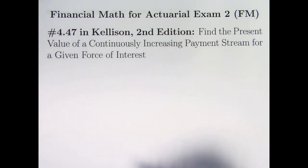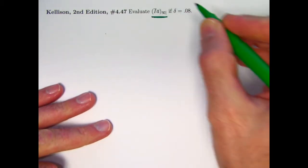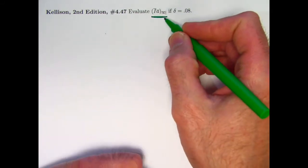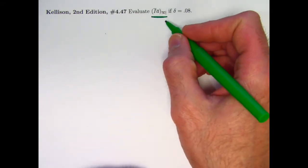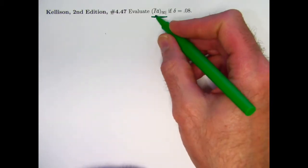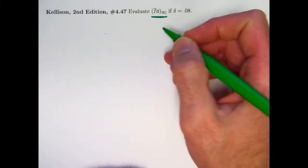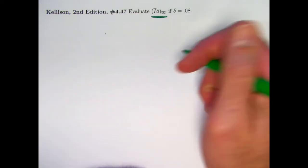We're going to be finding the present value of a continuously increasing payment stream for a given force of interest. A payment stream is a cash flow where you're getting money every minute, every second, every millisecond of every day for a certain amount of time. The problem statement, as you can see, is very short. You might stop and think about what this means if you've never seen it before. The A stands for a present value. The infinity stands for the fact that this is going to be some sort of perpetuity. The i stands for the fact that it will be increasing. And the bars, if you've never seen those before above the i and the A, mean it's a continuous payment stream in this case.